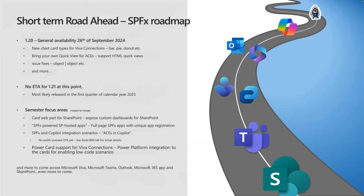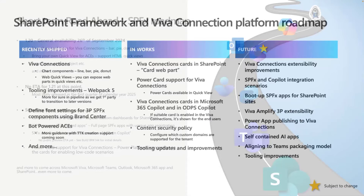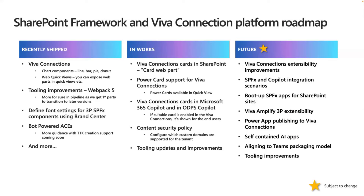No changes to the framework right now. The last GA version is 1.20 from September. No ETA for 1.21 at this point — most likely first quarter of next fiscal year. We're heading into the Thanksgiving and holiday season, so we won't ship a new version in December. Looking forward to a lot of new capabilities within the next three to eighteen months across the whole Microsoft tree.